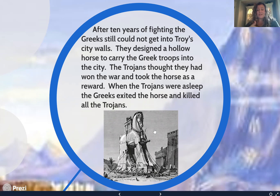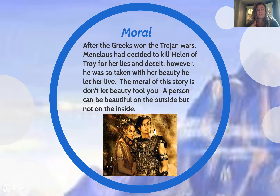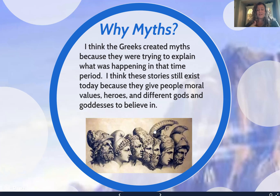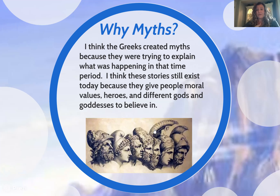After the Greeks won, Menelaus had initially decided to kill Helen for her treachery, but when he saw her for the first time again he was taken with her beauty instead and spared her. The moral here is that a person can be beautiful on the outside but not on the inside. This story and this specific character within literature has carried us through countless stories, and the two poems we're reading today do the same thing.